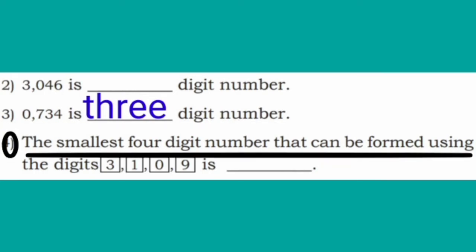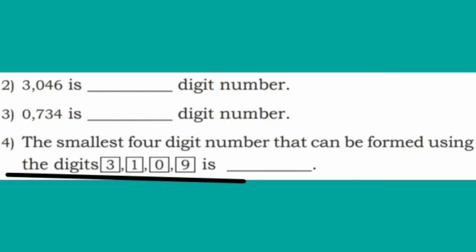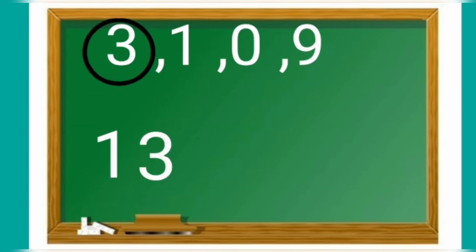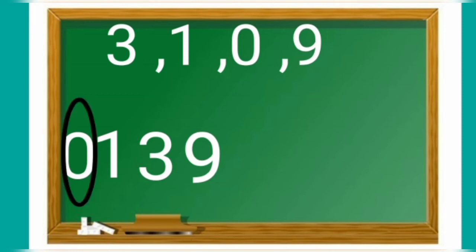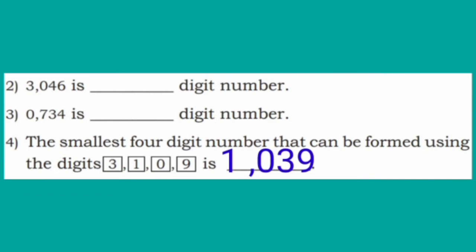Fourth question: the smallest 4-digit number that can be formed using the digits 3, 1, 0, 9 is blank. Observe the board children. Among these numbers, the smallest is 1. Among the remaining 3 digits, the next smallest is 3. The last number is 9. Since 0, 1, 3, 9 would start with 0, making it a 3-digit number, we interchange the beginning 0 with its next digit. So the answer is 1,039 — the smallest 4-digit number is 1,039.